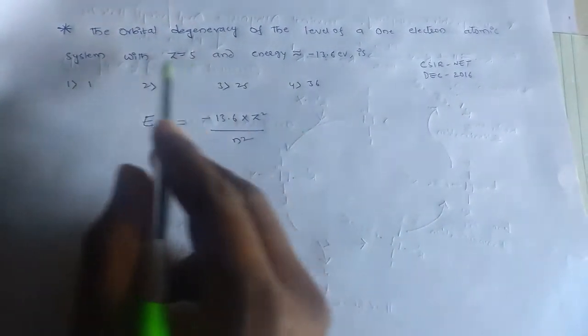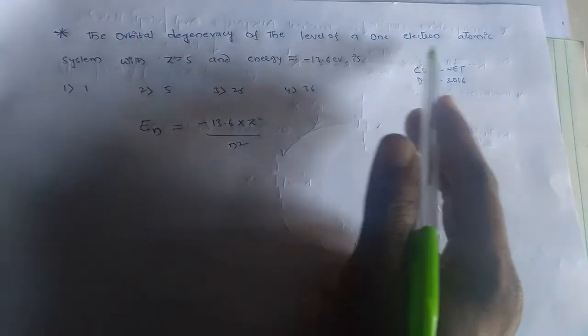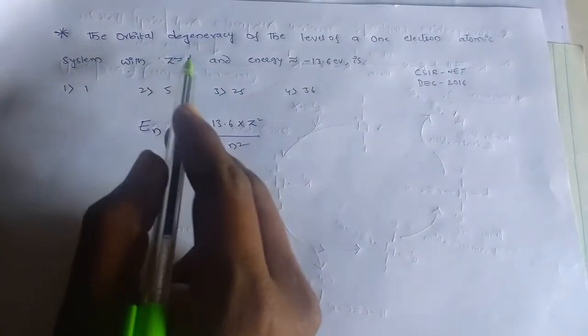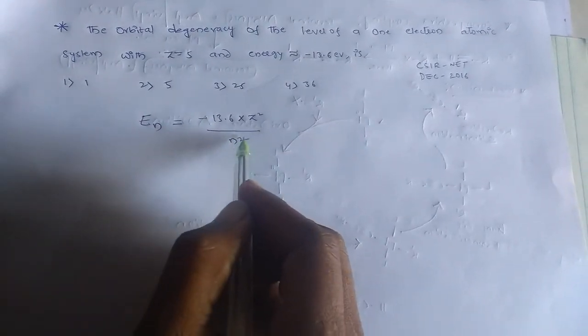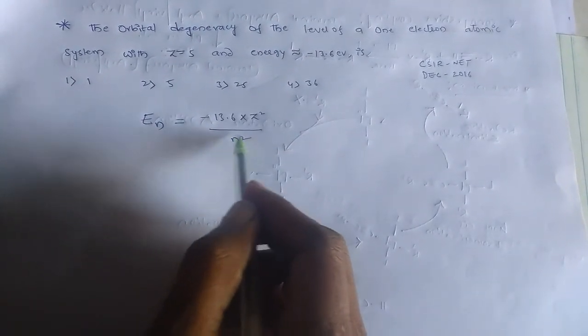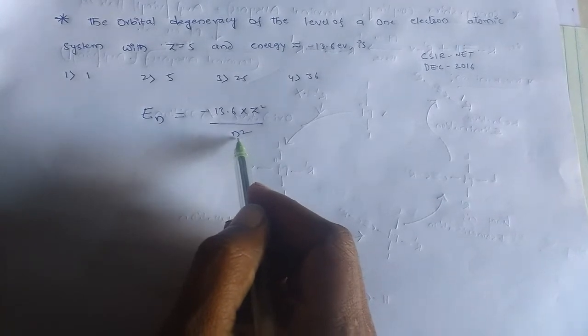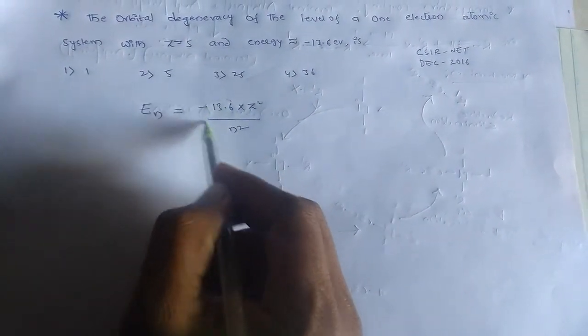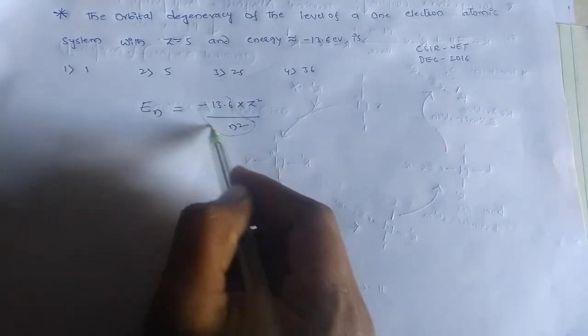Here we don't know the principal quantum number for one electron atomic number. That means it doesn't give in the question. So the principal quantum number here we should take it as a constant, and so this 13.6, these are all constant.